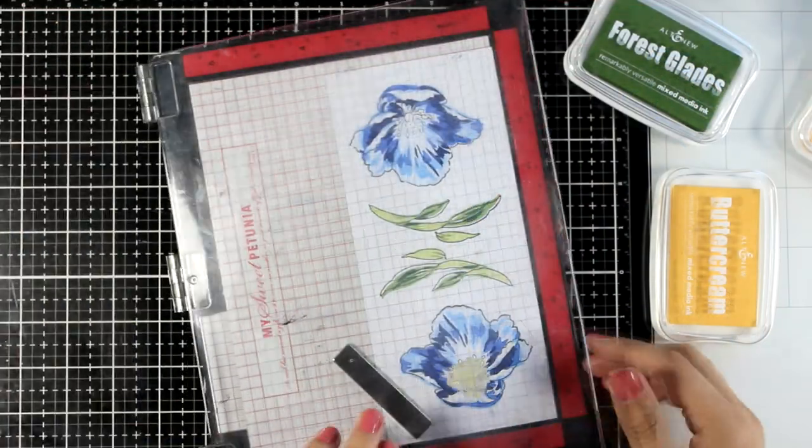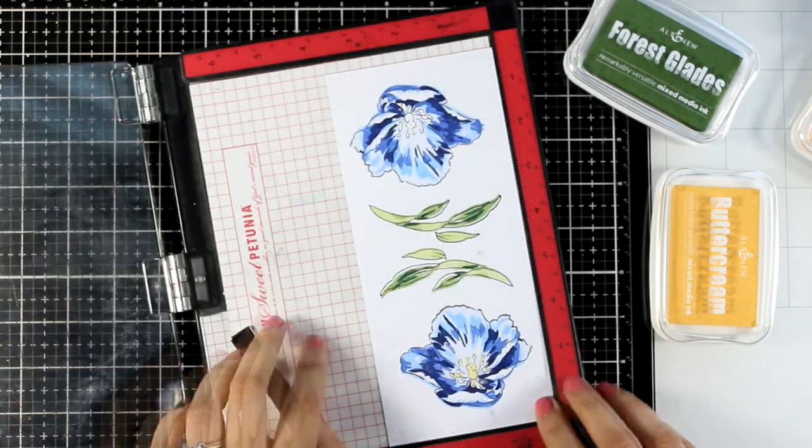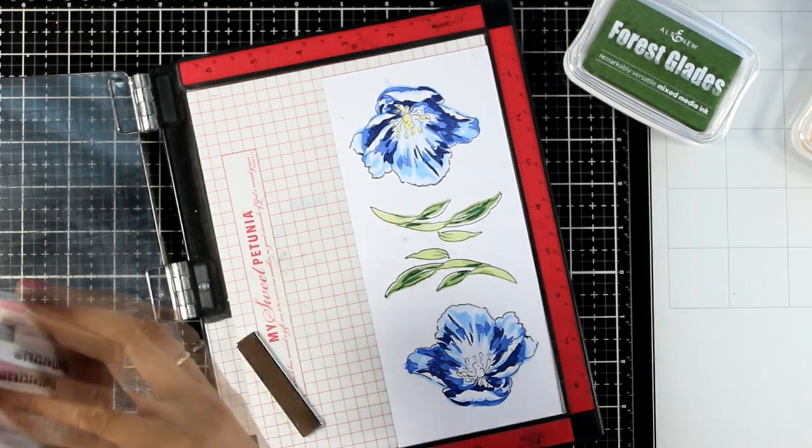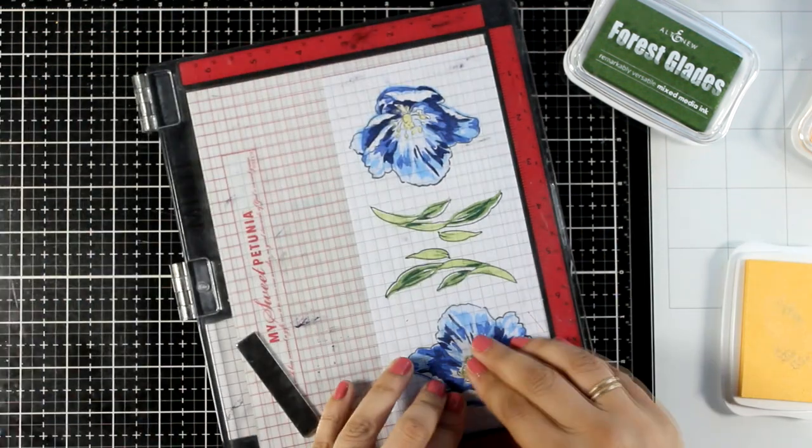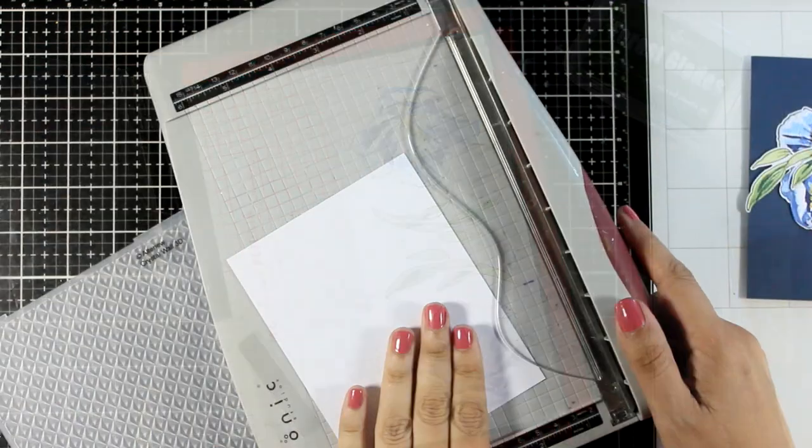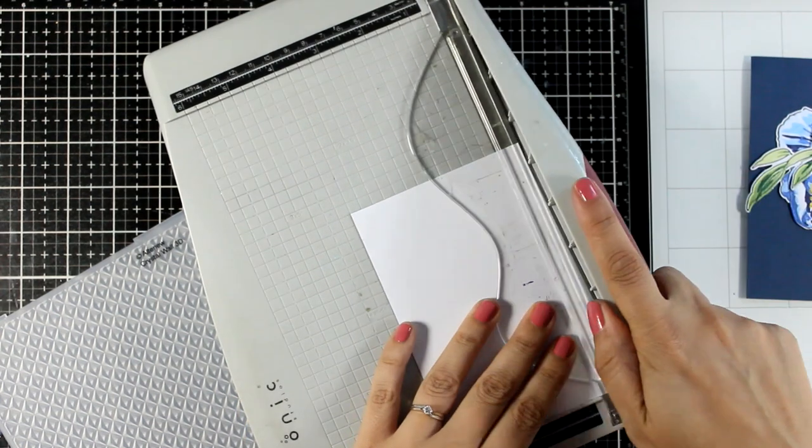I did stamp a couple of leaves again from the same stamp set and I did use mixed media ink again to color it in. I am using the yellow colors for the center and you will see that I didn't even bother to align those layers perfectly. It looks just fine at the end, as long as you embrace that imperfection.